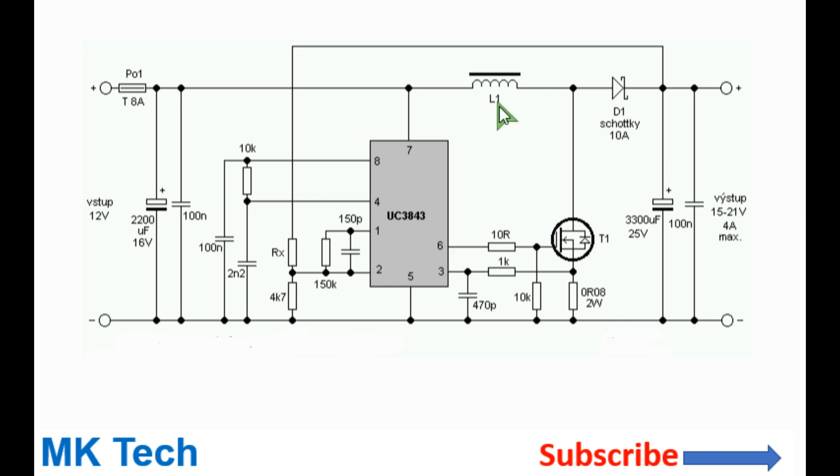The circuit is a classical boost converter consisting of the inductor L1, the output Schottky diode D1, the transistor T1, and the PWM IC.